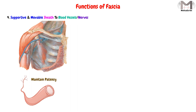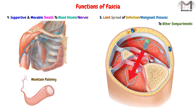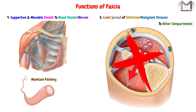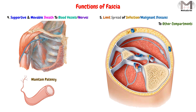The last and final function of the fascia is that because the fascia separates a muscle and organs from others, or a group of muscles from another, this separation is extremely important. Because if an infection occurs in one muscle or organ, the fascia will often limit the spread of infection to other compartments. It will also limit the spread of malignant diseases to other compartments. So these were the main functions of the fascia, and before that, we explained the fascia in general.